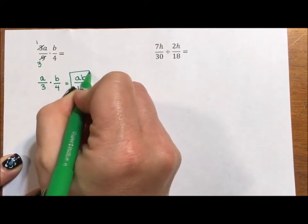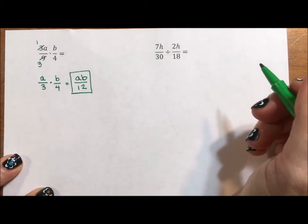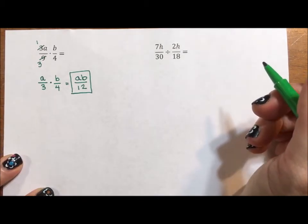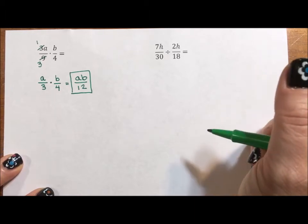and we have our final answer. Sometimes I think the variables make it easier because you don't have to think as hard about how to reduce them because the only thing that can reduce a variable is that exact same variable.